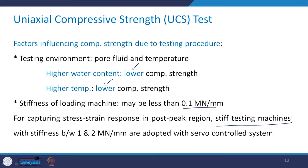If the machine is not sufficiently stiff, it will not be able to capture the post-peak behavior. To capture the stress-strain response in the post-peak region, we need stiff testing machines. The stiffness for these machines can vary between 1 to 2 MN/mm, and these have servo-controlled systems. Making the machine components stiffer achieves this — the stiffness data is available directly from the manufacturer. This basic understanding is important.